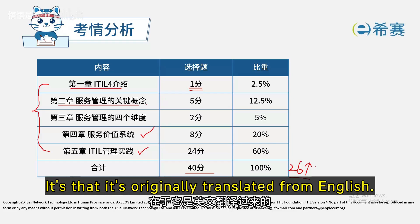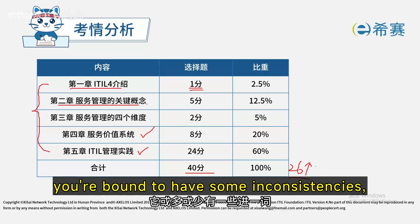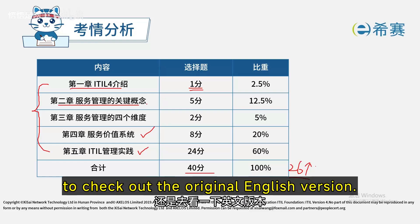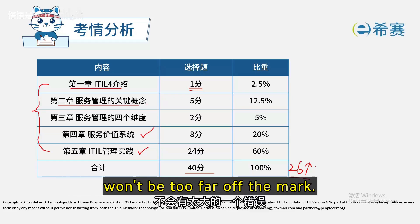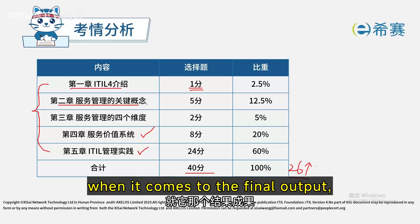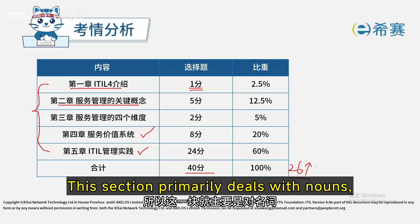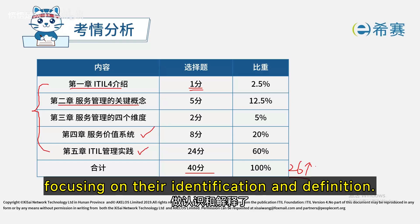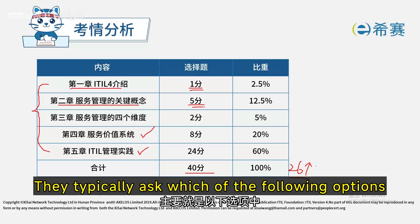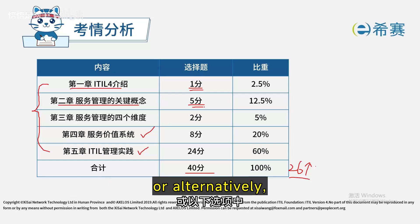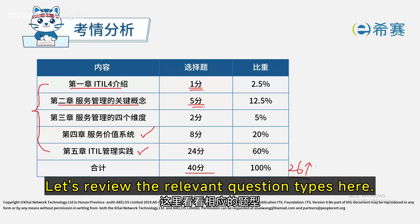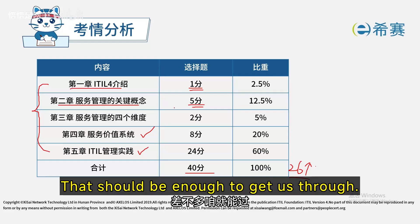The tricky part is that these concepts have been translated from English, so there are bound to be similar words with slight differences. If you have a solid grasp of English, checking the original English version reduces translation errors. In Chinese, many words have similar meanings — for example, 'results' versus 'outcomes' need to be distinguished. This section is mostly about understanding nouns and definitions. The five exam marks here focus on identifying which options describe efficacy or function, and key term comprehension.